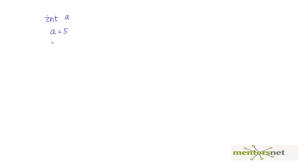If you remember, whenever we define a variable of integer type we do 'int a' and assign a value. Now suppose you want to store the grades of students — grades are integers between 0 and 100. If you have 100 students, one option is to define 100 variables like g1, g2, g3, up to g100. Another approach is to use the array data structure.